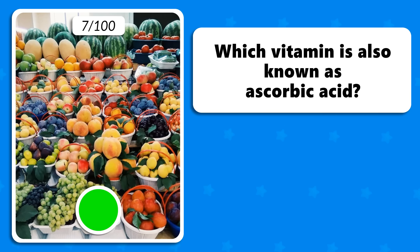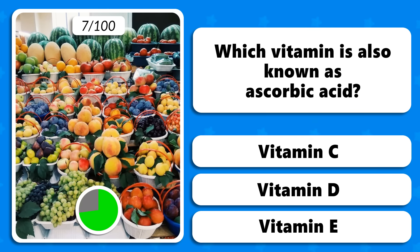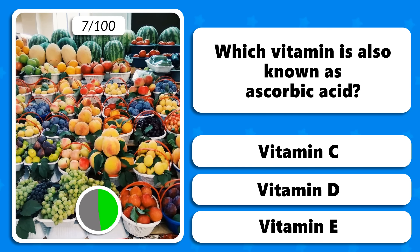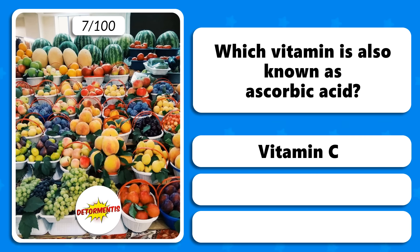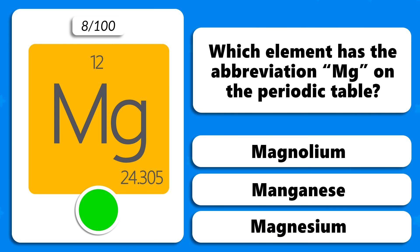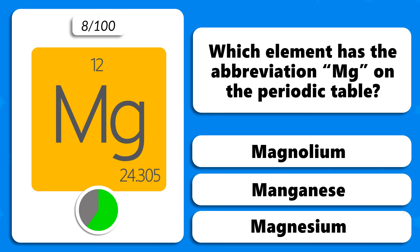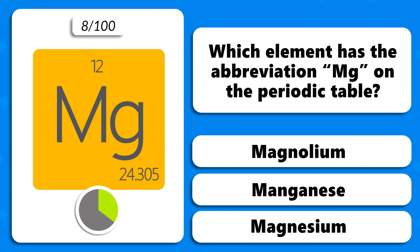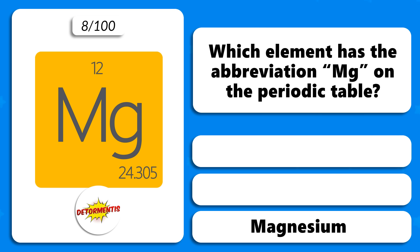Which vitamin is also known as ascorbic acid? Vitamin C, vitamin D or vitamin E? Which element has the abbreviation Mg on the periodic table? Magnolium, manganese or magnesium? The answer is magnesium.